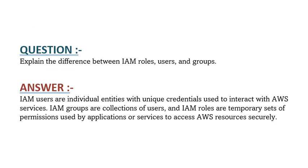Our next question is, explain the difference between IAM roles, users and groups. IAM users are individual entities with unique credentials used to interact with AWS services. IAM groups are collections of users, and IAM roles are temporary sets of permissions used by applications or services to access AWS resources securely.